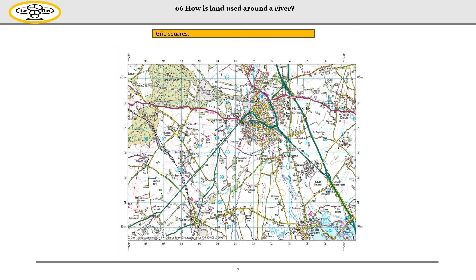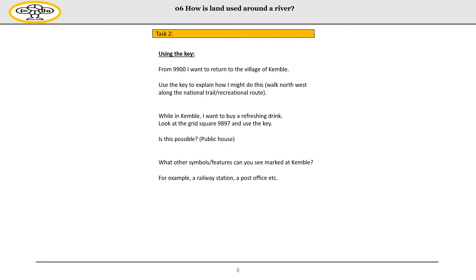Now you've had a little bit of practice locating different places. You're going to have a go at locating your own place and planning a journey using this map. For your independent application, you are going to be planning your own journey using the map and grid references. You are going to start from grid reference 9900, and from there you need to return to the village of Kemble. You're going to use the key to explain how you might do this walk. You can decide where you might go on the way — for example, you may decide you want to buy a refreshing drink, which would be in 9897 because there's a public house there. If there are any other symbol features you can see marked at Kemble, you can use these as part of your grid reference to visit different places along your journey. For example, you may want to go to a railway station or a post office in order to reach Kemble.